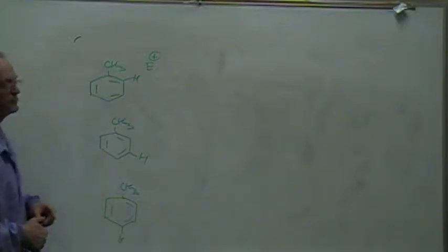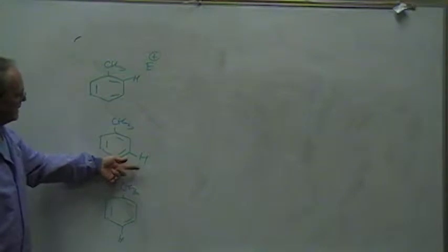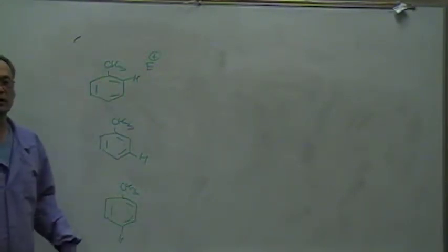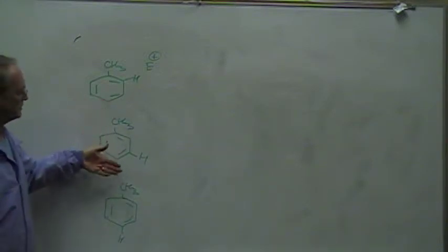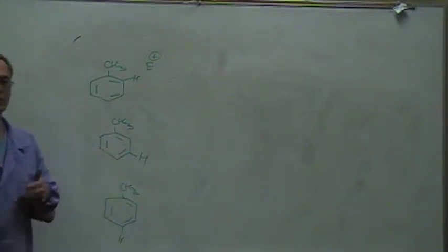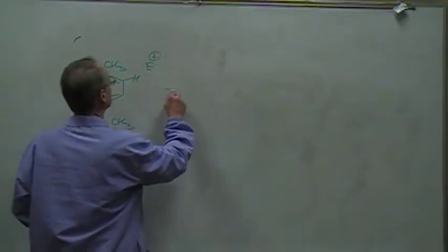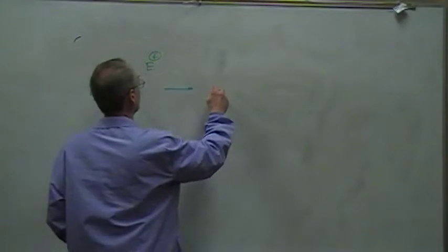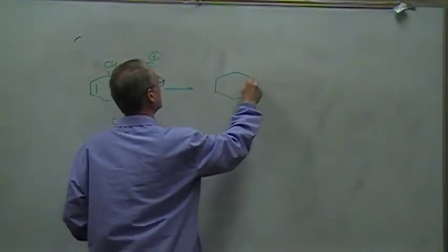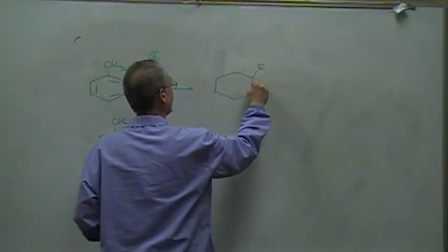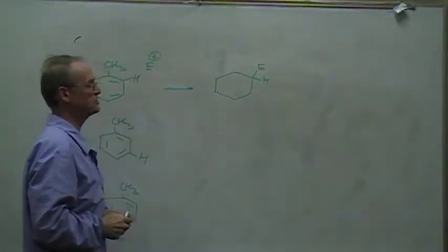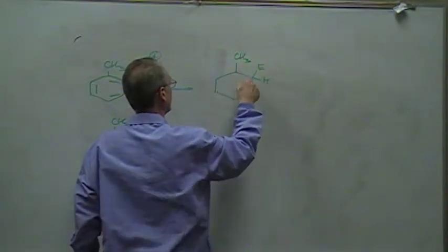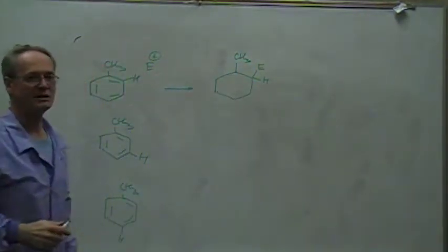I've drawn the hydrogen explicitly at the ortho position, at the meta position, and at the para position. Remember that there are hydrogens on all five positions; it's just that I've drawn them specifically in those positions because those are the places we're going to try to replace. In the first case, if we do the attack of the electrophile on the benzene ring, the electrophile and the hydrogen will end up being attached to the same carbon.